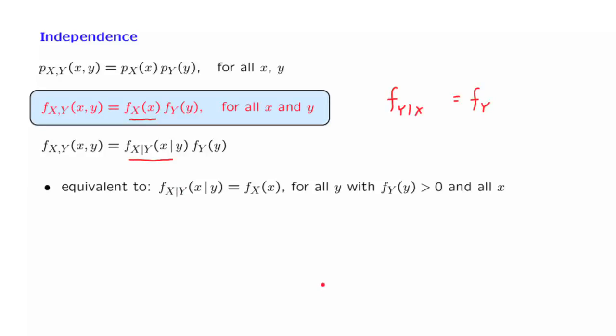We can also define independence of multiple random variables. The definition is the obvious one. The joint PDF of all the random variables involved must be equal to the product of the marginal PDFs. Intuitively, what that means is that knowing the values of some of the random variables does not affect our beliefs about the remaining random variables.